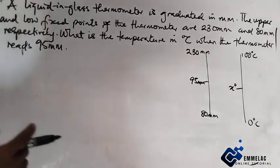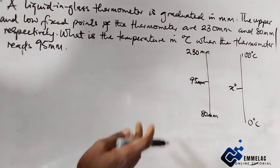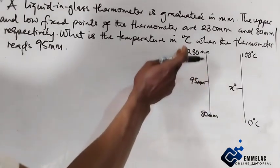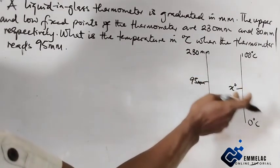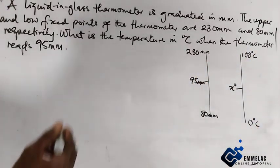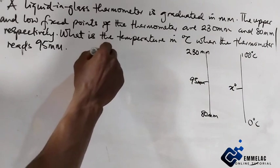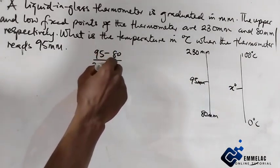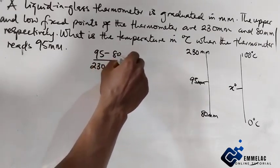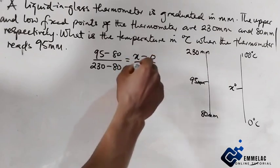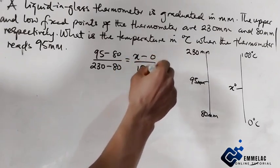Now using proportion, we can write: (95 - 80) over (230 - 80) equals (x - 0) over (100 - 0).